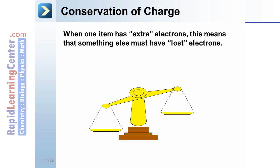Conservation of charge. While one atom may have extra electrons, too many, this means that something else must have lost electrons, or given those electrons to the object from somewhere.